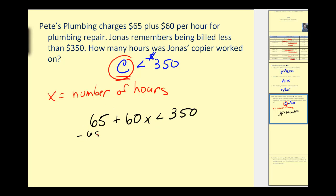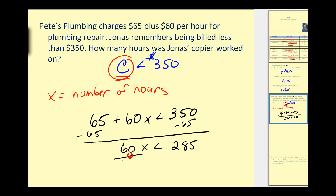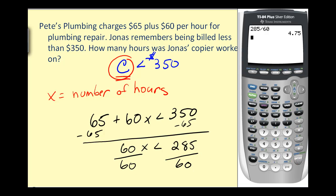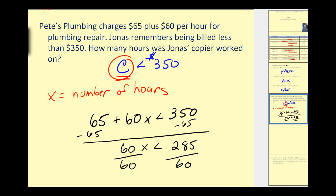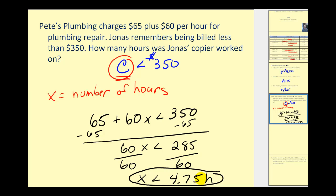If we solve this inequality for X, we subtract 65 on both sides. That gives us 60X less than 285, and dividing by 60, X is less than 4.75 hours. If this company bills to the nearest hour, X would have to be less than 4 hours. But if they bill for fractions of hours, it could be any value less than 4.75 hours. We don't know the exact length of the job, but this gives us an idea of what's possible.